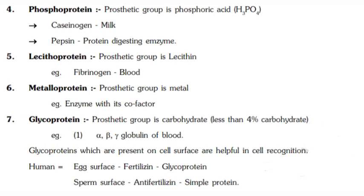Examples of glycoproteins include alpha, beta, and gamma globulin proteins of blood. Glycoproteins present on the cell surface help in cell recognition. The human egg surface is composed of a fertilizing protein which is a glycoprotein, while the sperm surface is composed of anti-fertilizing protein, which is a simple protein.